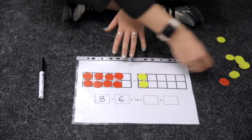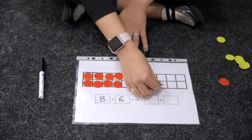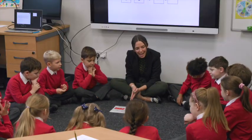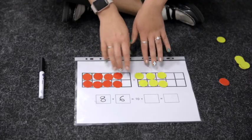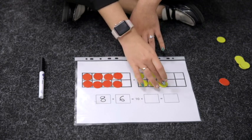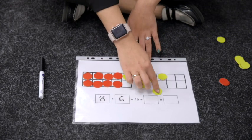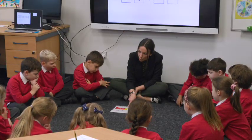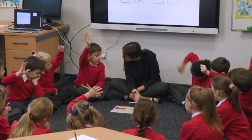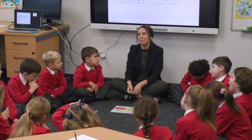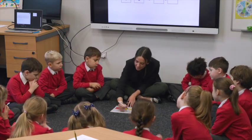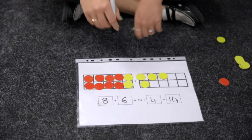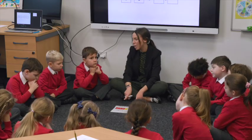Good, so I am going to now make a full 10. What I'm going to do is move two of my counters from my second tens frame to the first. So now I've got 10 add — yes, oh my goodness, fantastic! 10 add four is equal to 14, and that is my final answer. So that's the first way I could have done it.